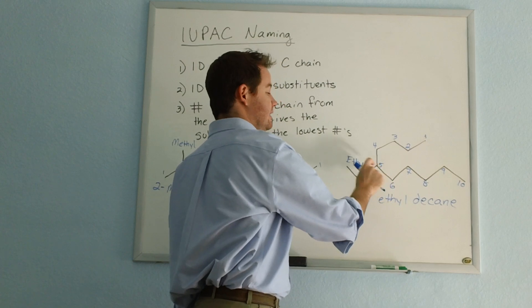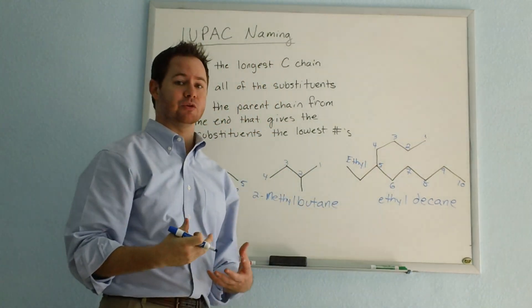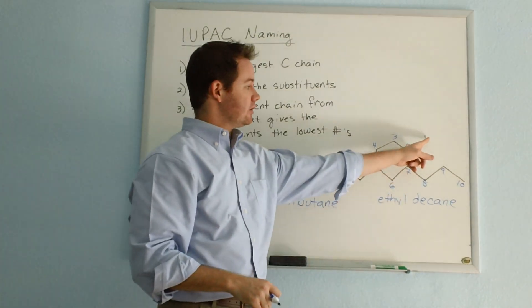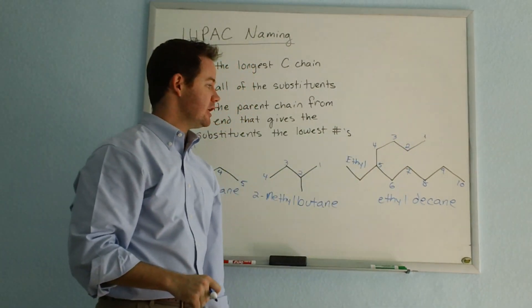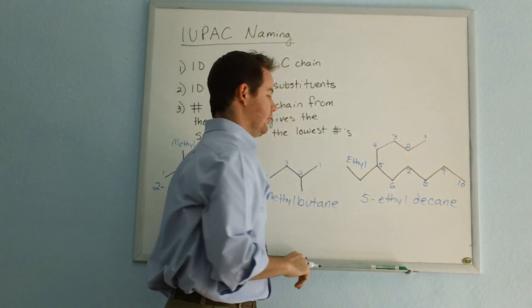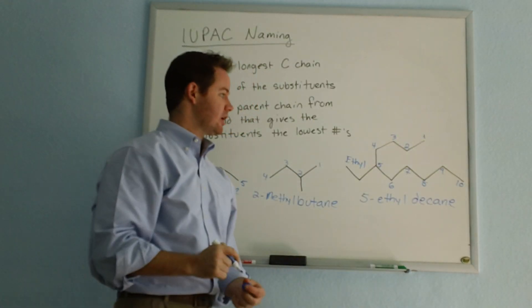three, four, five, six would be the number where the ethyl group branches. So in this case, to have our lowest system of numbers possible, we have to start numbering up here on our parent chain. And we're going to end up with 5-ethyldecane as the name of this compound.